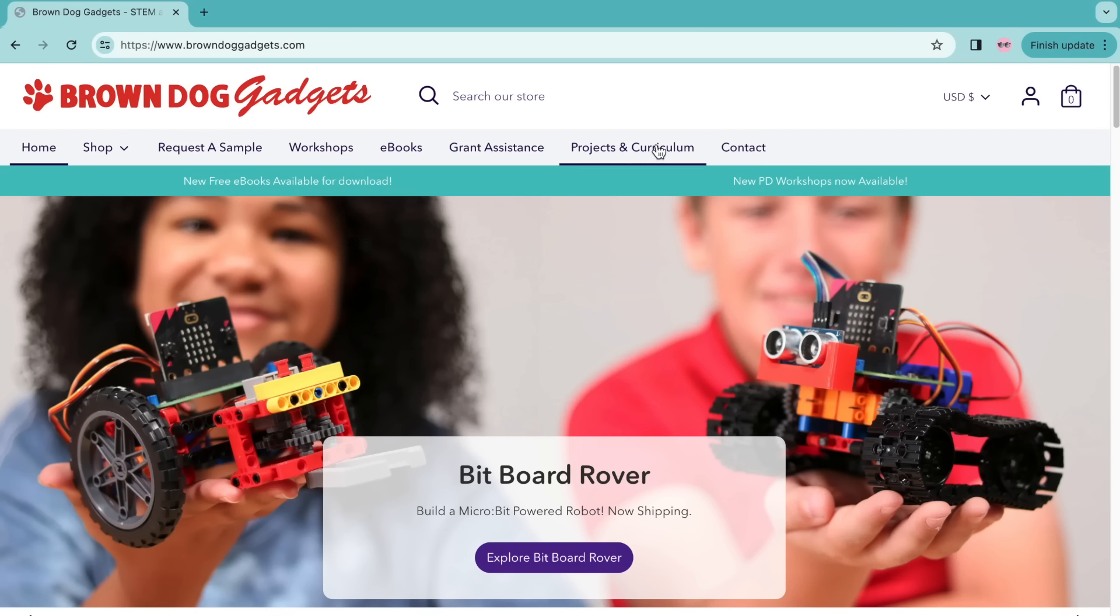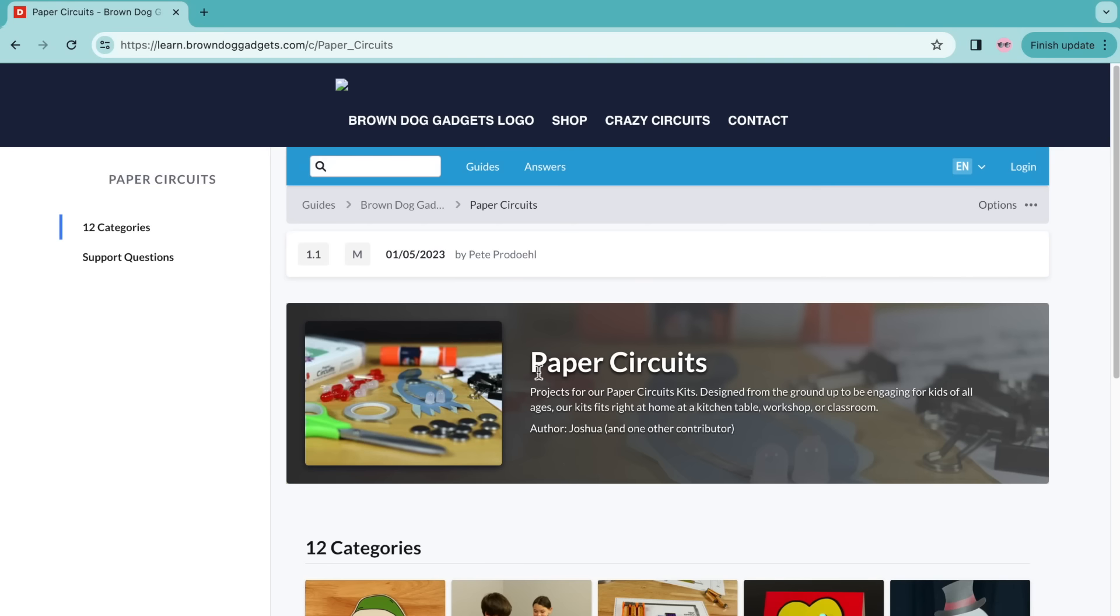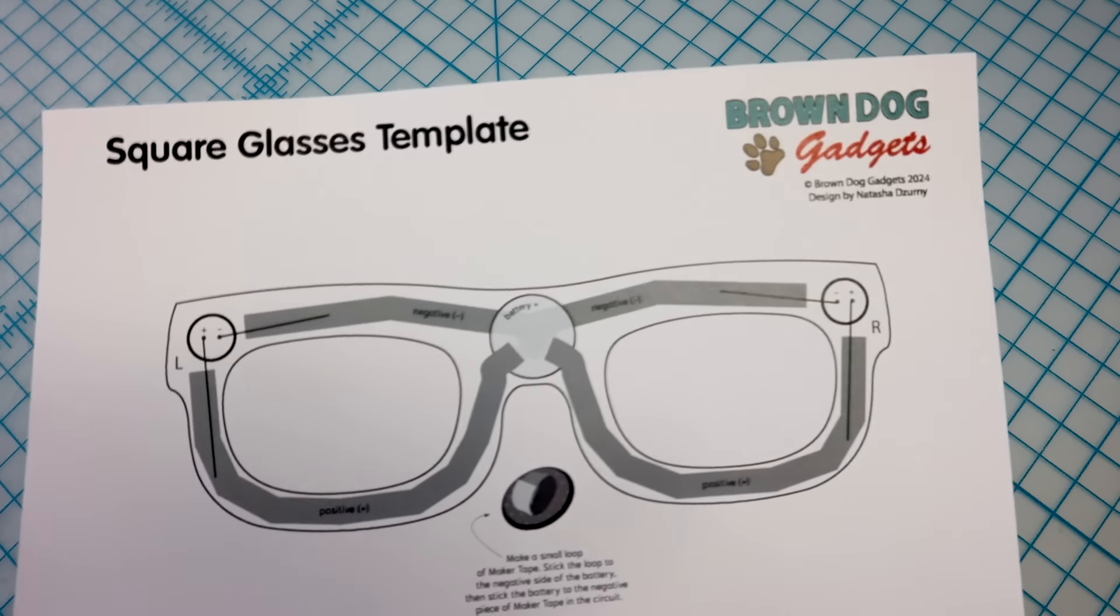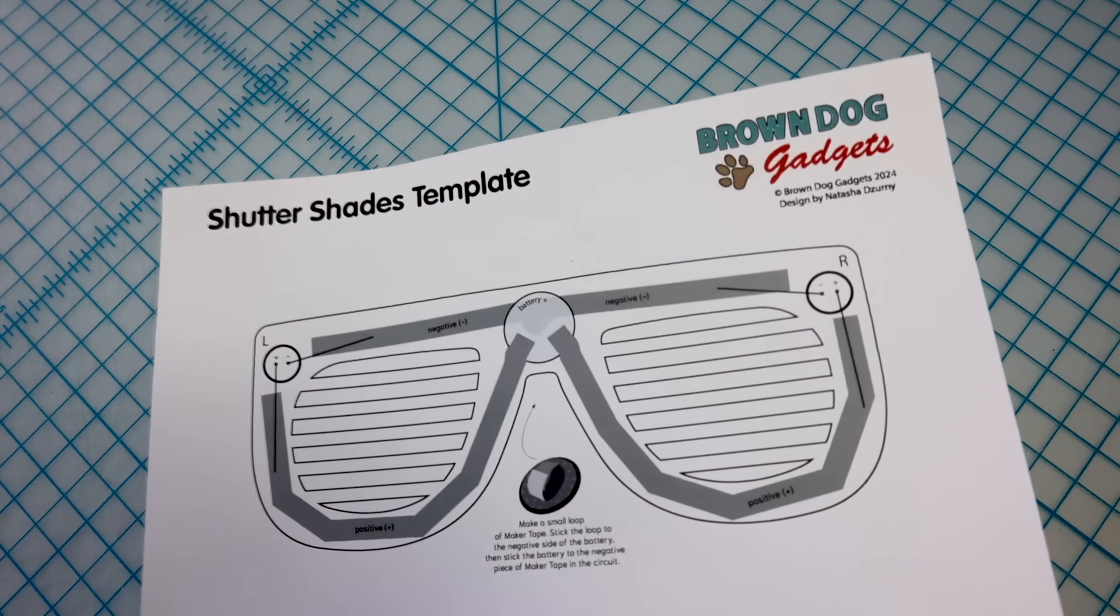You can download the template for free from browndoggadgets.com where there are four frame designs to choose from: round, square, cat eye, and shutter shades.